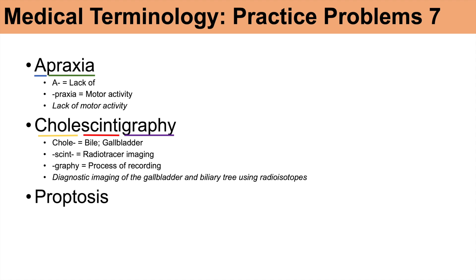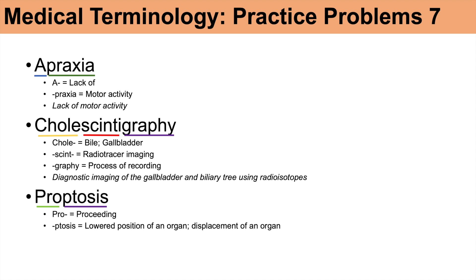The last word is proptosis. 'Pro' means proceeding, and 'ptosis' is a lower position or displacement of an organ — we generally think of ptosis as drooping eyelids. Proptosis is a little different; it means forward displacement of an organ. An example of proptosis is generally with eyes — a bulging out or forward displacement of the eye. But broadly, proptosis means a forward displacement of an organ.